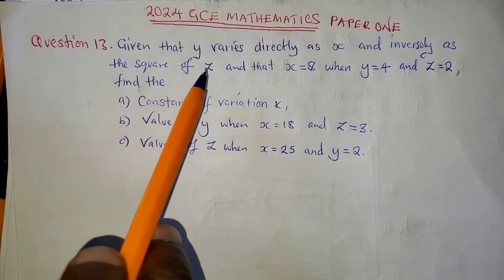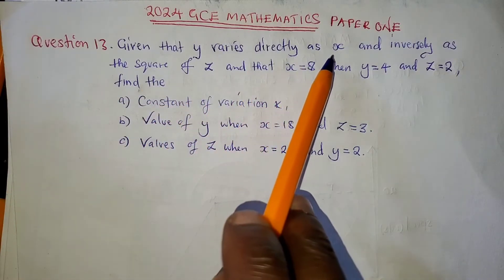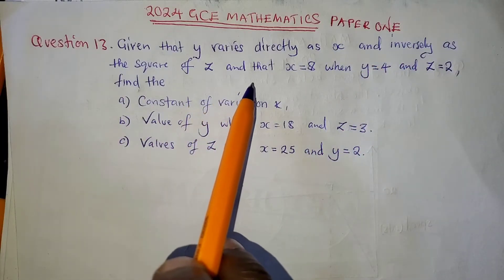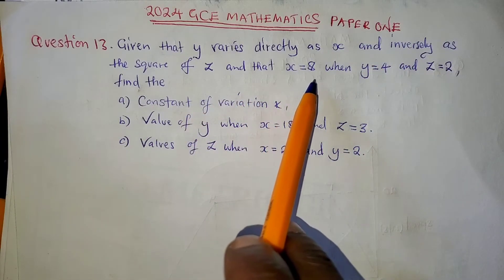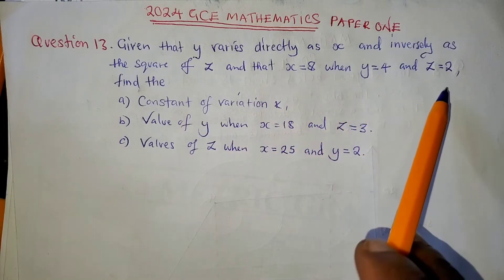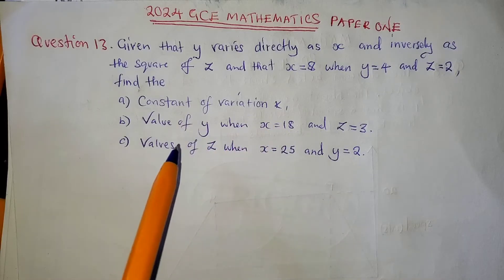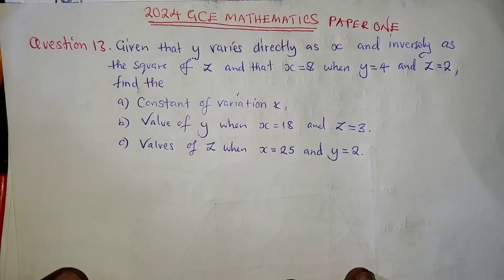Question 13 reads: given that Y varies directly as X and inversely as the square of Z, and that X is 8 when Y is 4 and Z is 2, find the constant of variation. Now, how we solve this, this is variation, of course.